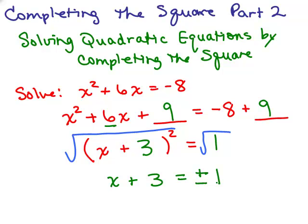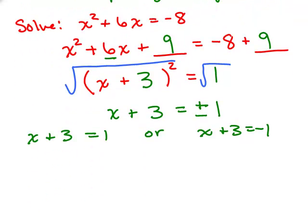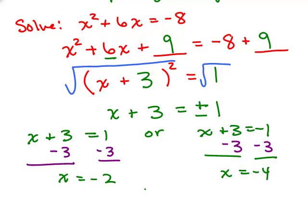This gives us two separate equations: x plus 3 equals 1, or x plus 3 equals negative 1. So now we can solve those by subtracting 3 from both sides. x equals negative 2, and also the other equation we get x equals negative 4. We've got two solutions: negative 2 and negative 4 to the original equation x squared plus 6x equals negative 8.